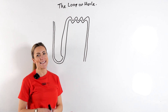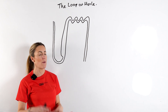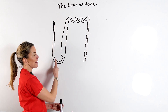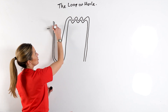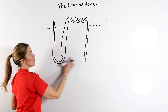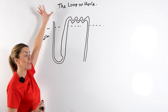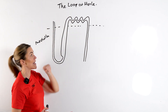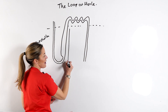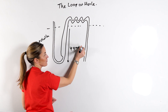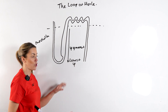Let's talk about the loop of Henle in the kidney nephron. The function of the loop of Henle is to maintain the water potential gradient going down the medulla. The loop of Henle and the collecting duct descend into the medulla, the middle region of the kidney. Up here is the cortex, the outer region where you find the Bowman's capsule, the PCT and the DCT. The job of the loop of Henle is to make sure there is a water potential gradient established as you go down the medulla, with the lowest water potential right at the bottom.